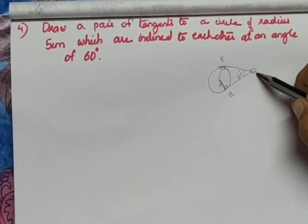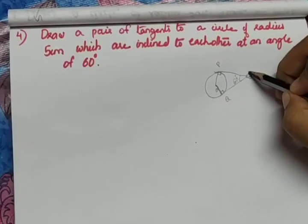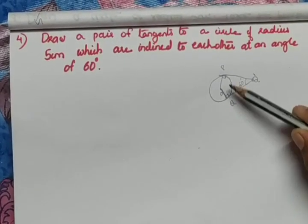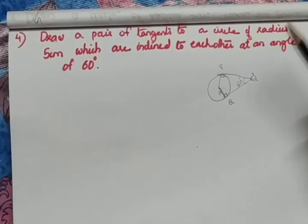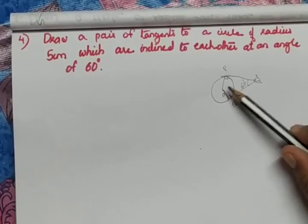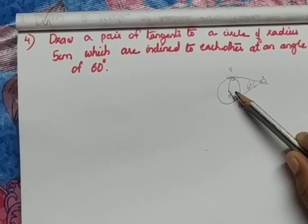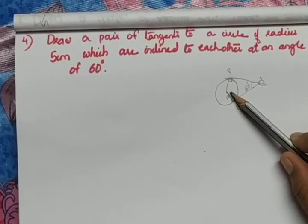Consider the quadrilateral O, P, Q dash Q. Then, angle sum will be 360. This is 90, this is 90, so 180 is over. That means, the angle O plus angle Q dash must give you 180. Already it is given that this is 60 degree. So, what will be angle O? 120 degree.